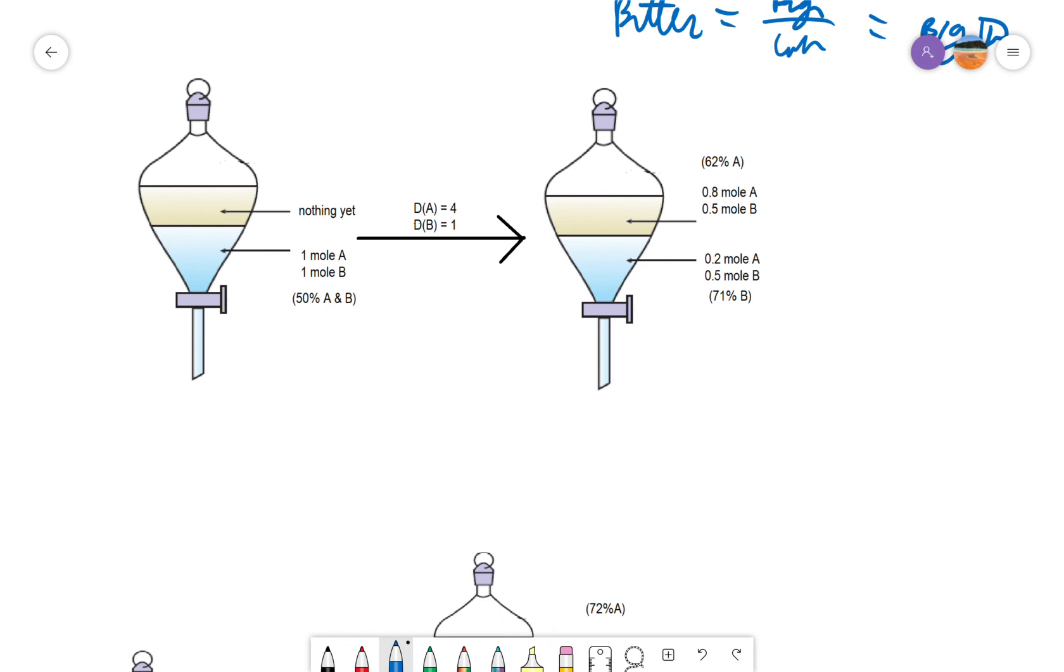Consider a case where we have a mixture of A and B. A has a distribution ratio of 4 to 1. That means that it is more soluble in the organic phase under an equilibrium condition by a factor of 4. B, the other compound we're trying to separate has a distribution of 1, which means it is equally soluble in the upper and lower phases. These differences in the distribution coefficient allow us to do a separation.